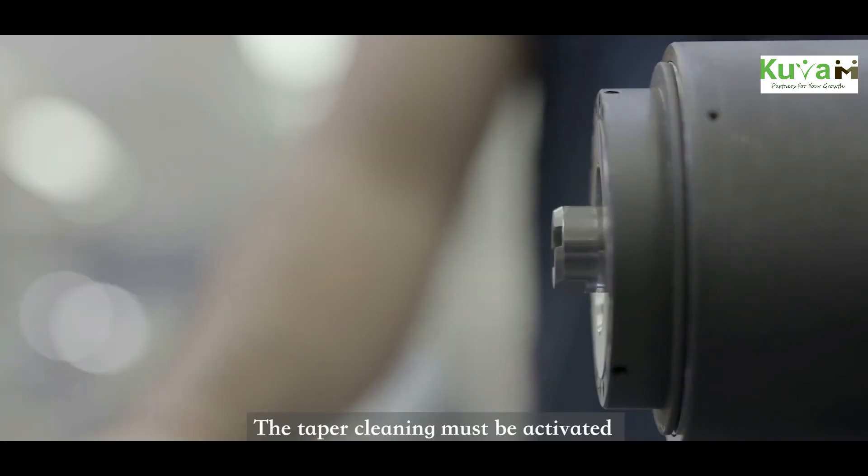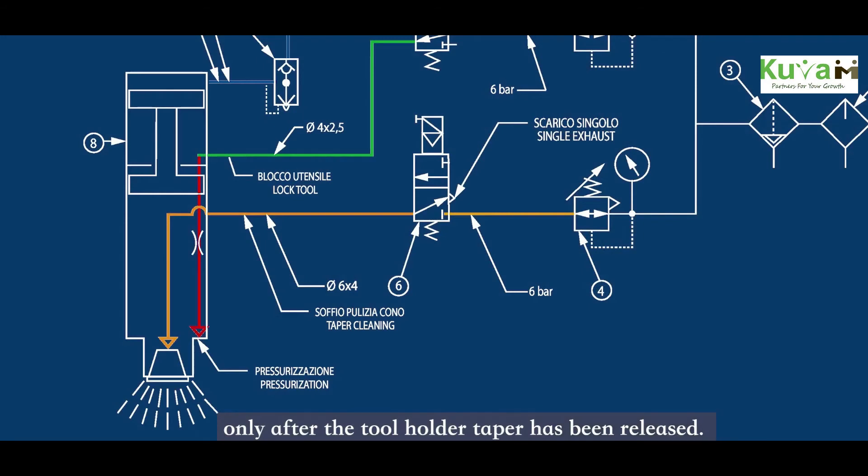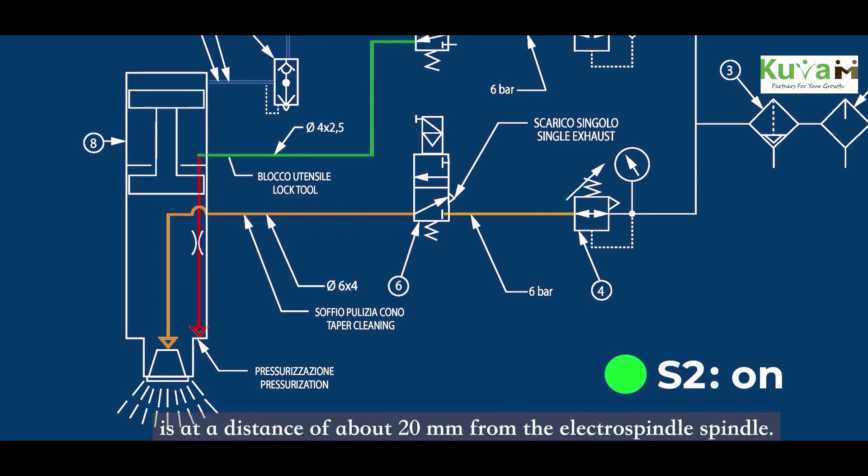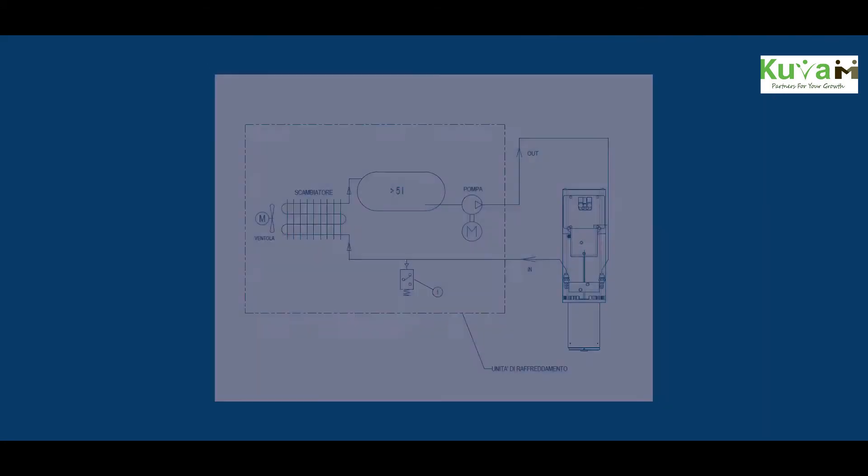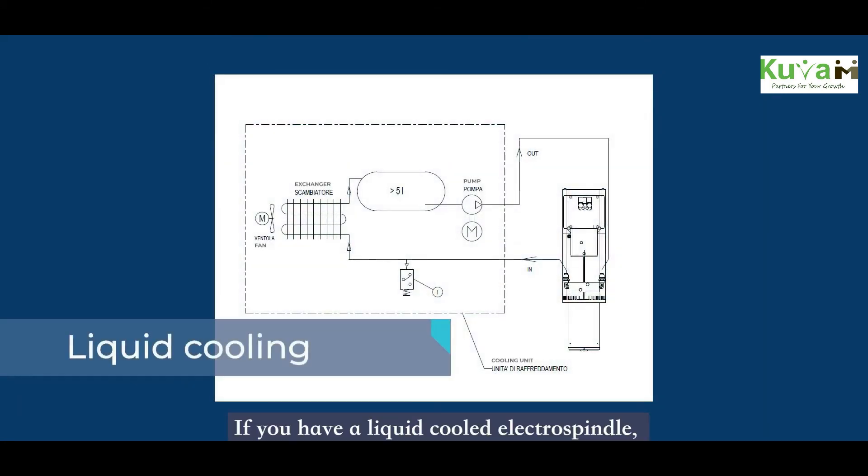The taper cleaning must be activated only after the tool holder taper has been released. Wait for the S2 sensor clamp open to switch on. The taper cleaning can be disabled when the taper is at a distance of about 20 mm from the electrospindle, if you have a liquid cooled electrospindle.